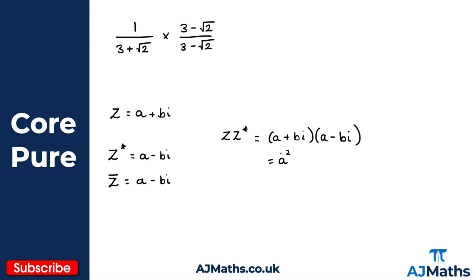We expand this using FOIL. First: a times a gives a squared. Then: a times minus bi gives minus abi. Then: bi times a gives positive abi. Finally: bi times minus bi gives minus b squared i squared.